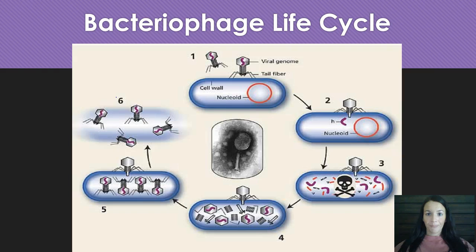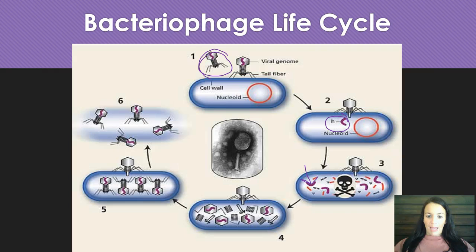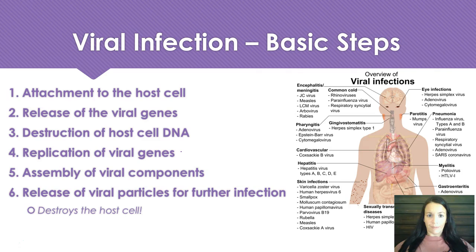Here's a look at the life cycle of a bacteriophage — the lytic cycle. The virus enters, the strand of DNA goes into the bacteria, and the virus takes over the cell. It makes more viral DNA, then all the little viruses are assembled at step four and five. The cell then breaks open through lysis, and that's how the new viruses get out into the body to infect more cells. Basic steps: attachment, release of viral genes, destruction of host cell DNA, replication of viral genes, assembly, and release. Remember, it destroys the host cell.